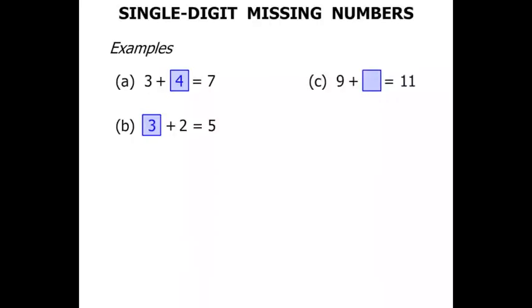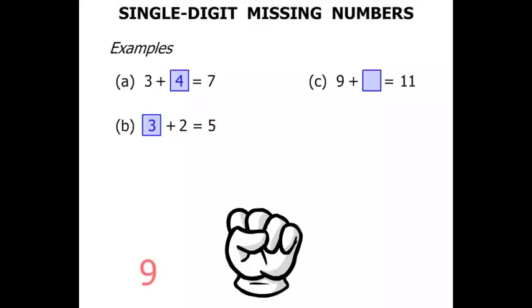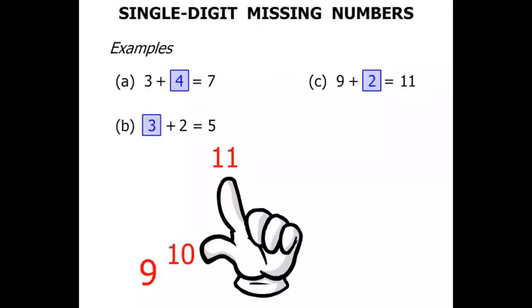9 plus something equals 11. So there's our hand. Again we start with the number we've got. There's 9. We need to get to 11. So in our mind we think 9 and then 10, 11. So we only needed 2 more to get to 11 didn't we?